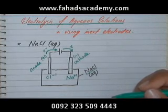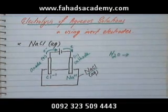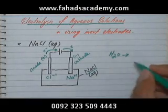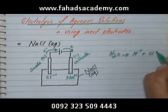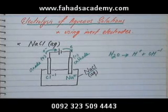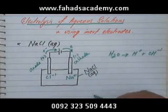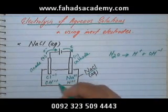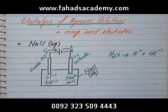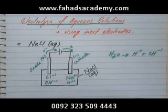When doing electrolysis of an aqueous solution, water is also present. H₂O breaks down into H⁺ and OH⁻. So apart from the two ions from the electrolyte — Na⁺ and Cl⁻ — you also have two extra ions from water: H⁺ and OH⁻. This always happens during electrolysis of aqueous solutions.